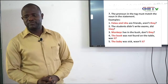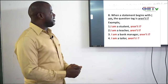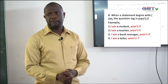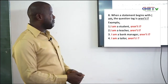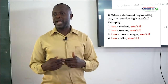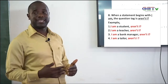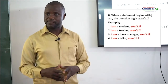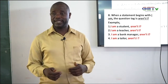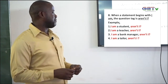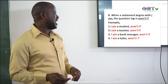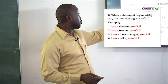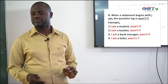When a statement begins with 'I am,' the question tag is always 'aren't I?' Examples: 'I am a student, aren't I?' — 'I am a teacher, aren't I?' — 'I am a bank manager, aren't I?' — 'I am a tailor, aren't I?' Anytime your statement begins with 'I am,' your tag question should always be 'aren't I?'